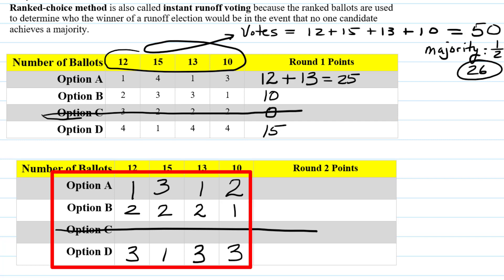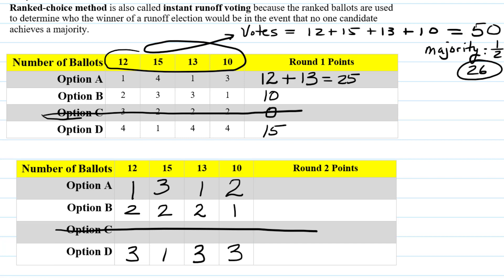Now we use these revised rankings and again give each candidate points for their first place. Option A still has first place on the 12-ballot and 13-ballot columns, so 25 altogether. Option B still has just one first place result, which is 10. Option D has one first place result, which is 15. Again, nobody has 26, so nobody has a majority — we have to eliminate the next lowest candidate, which is candidate B.